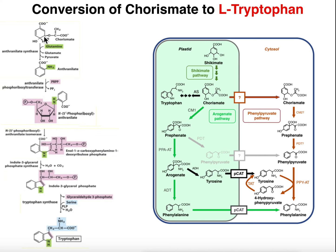We've already got chorismate in the plastid and we now have to use five enzymes to get tryptophan. The reason it's five versus three, as it was for tyrosine and phenylalanine, is because for those you're only generating one aromatic ring. Here we have two rings, so it's more complicated and we would expect to need more enzymes.